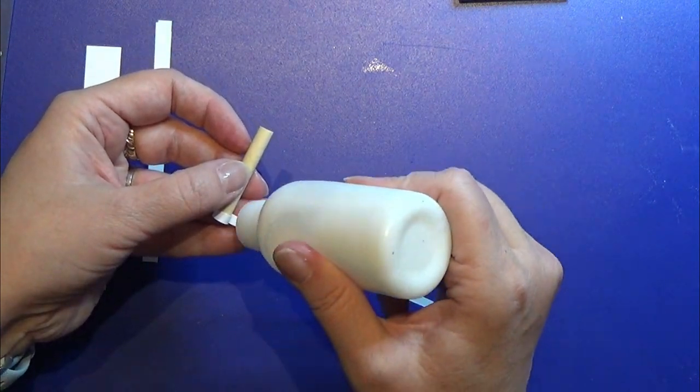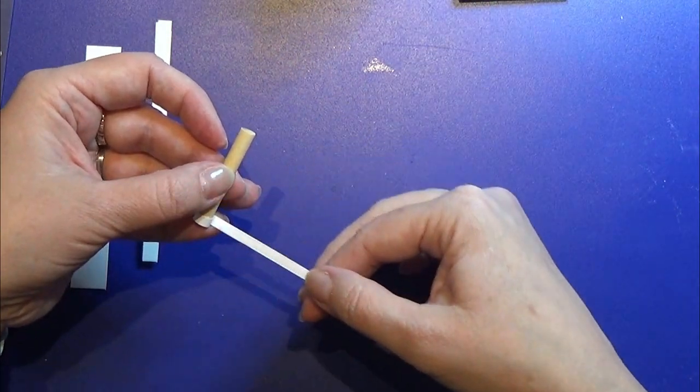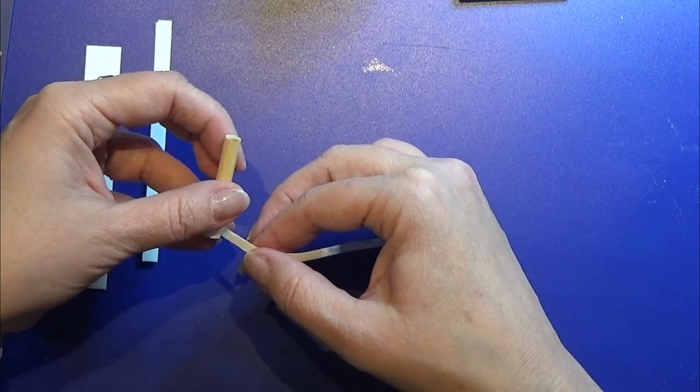This one is going to be the eyepiece, the place where you actually put your eye to see through the telescope.